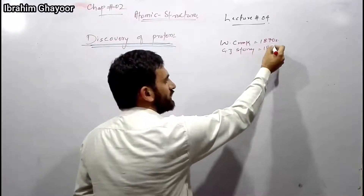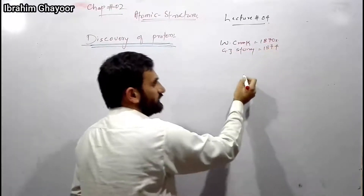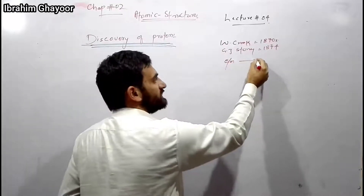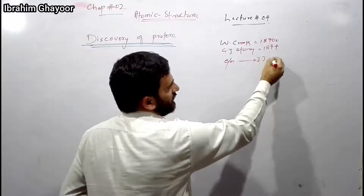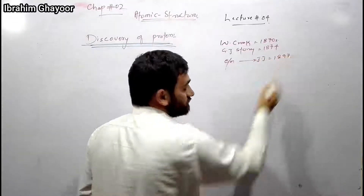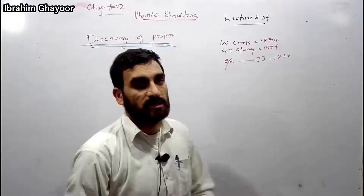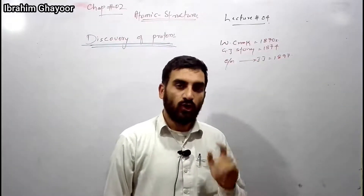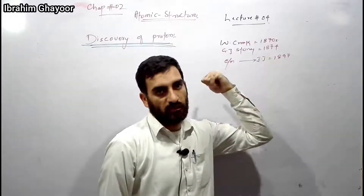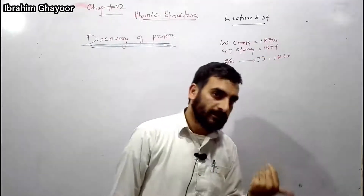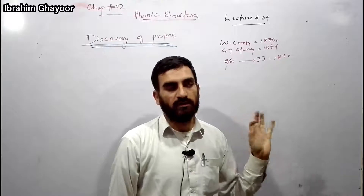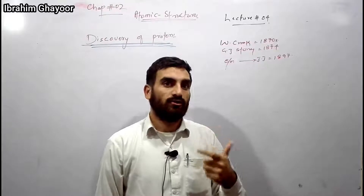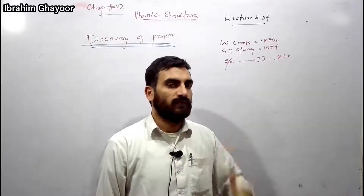In 1874, cathode rays were linked to the electron. The electron was named by Charles Thomas. JJ Thomson, in 1897, discovered the electron. So: who discovered cathode rays? William Crookes. Who discovered the electron? JJ Thomson. The cathode ray discovery is attributed to William Crookes; the electron discovery is attributed to JJ Thomson.